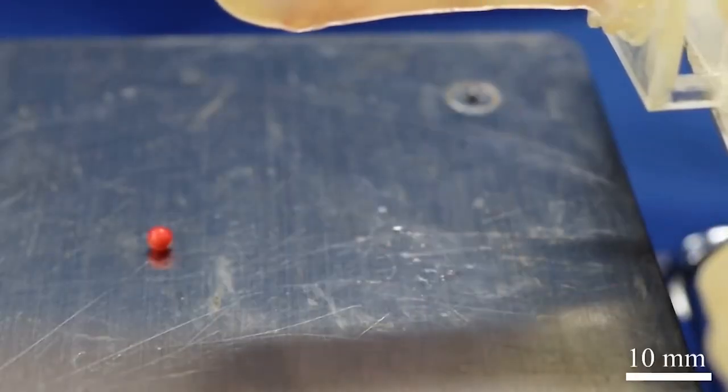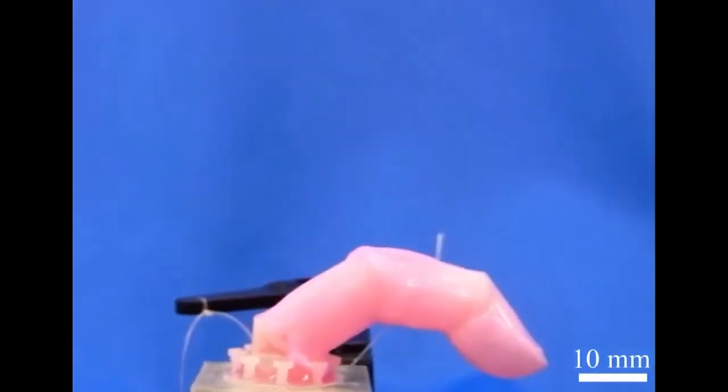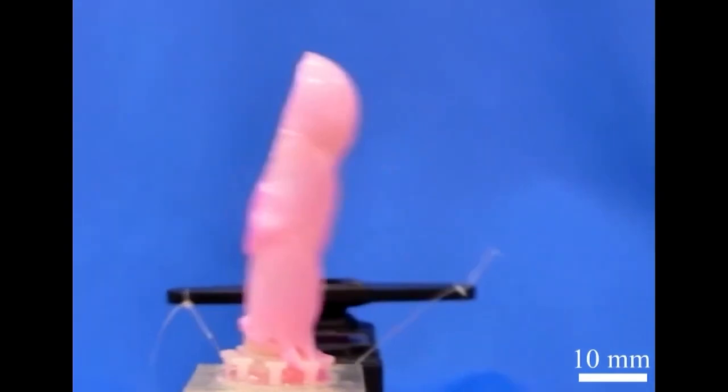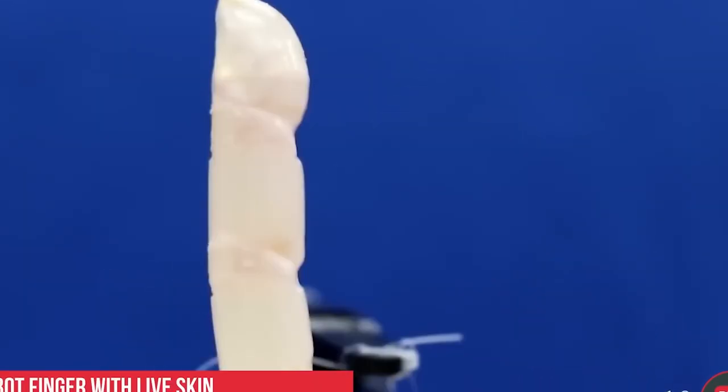The team discovered the entire skin-like layer was elastic enough to expand and wrinkled as the robotic finger moved when they put it to the test. Stretching and curling were both possible with the skin's strength and flexibility.